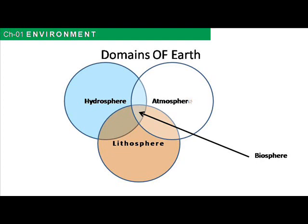Hydrosphere: the word hydrosphere originated from the Greek word 'hydror' meaning water. It is the combined mass of water found on, under and above the surface of Earth. Although Earth's hydrosphere has been around for about 4 billion years, it continues to change in shape, caused by continental drift which rearranges the land and ocean.